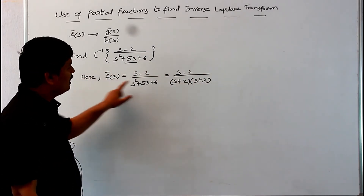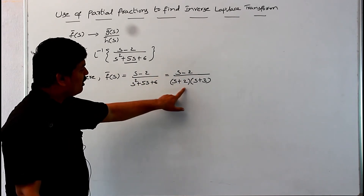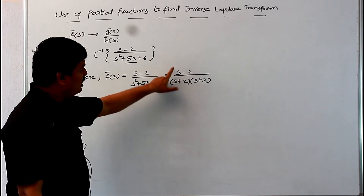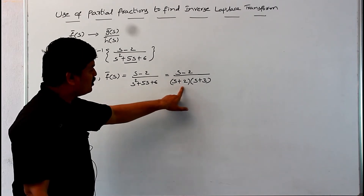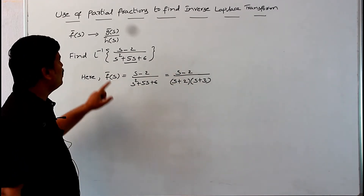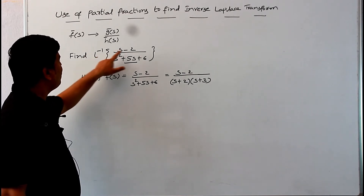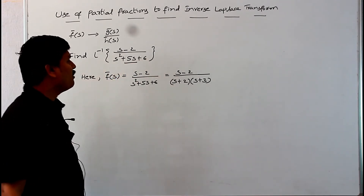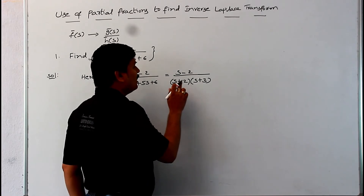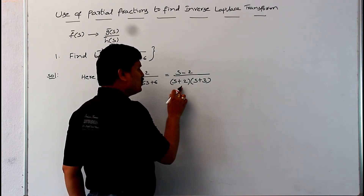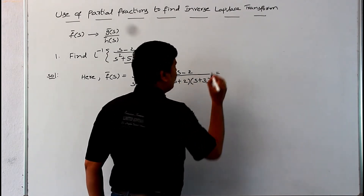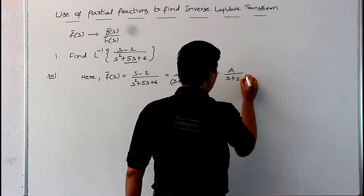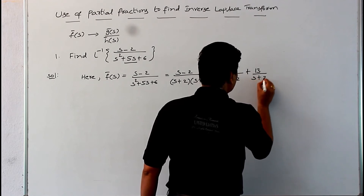Clearly, the function f-bar of s is of the form g-bar of s divided by h-bar of s, where g-bar of s equals (s minus 2) and h-bar of s equals (s plus 2) into (s plus 3). To find the inverse Laplace of (s minus 2) by (s squared plus 5s plus 6), we use the partial fraction method. In the denominator there are two linear factors: (s plus 2) and (s plus 3).